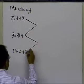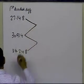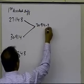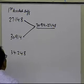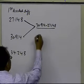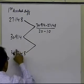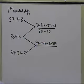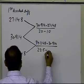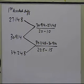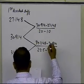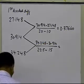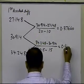Now I'm going to calculate the second divided difference based on these two numbers. The second divided difference is 30.914 minus 27.148, divided by t2 minus t0, which means 20 minus 10. And the next one will be 34.248 minus 30.914, divided by t3 minus t1, which is 22.5 minus 15. Those numbers turn out to be 0.37660 and 0.44453.